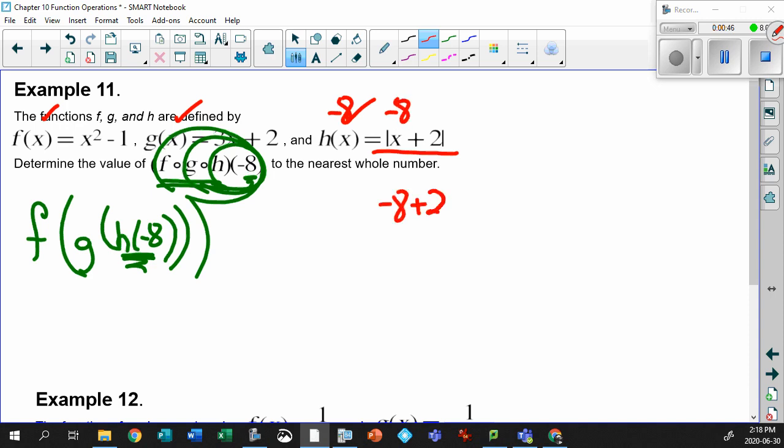So -8 plus 2, and we take the absolute value. This gives us the absolute value of -6, which is just 6. So we've taken care of this part.